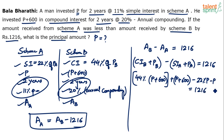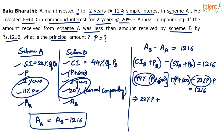Now simplifying: plus P and minus P cancel out. 44% of P minus 22% of P gives 22% of P. 44% of 600: 40% is 240, 4% is 24, giving 264. So: 22% of P plus 264 plus 600 equals 1216.